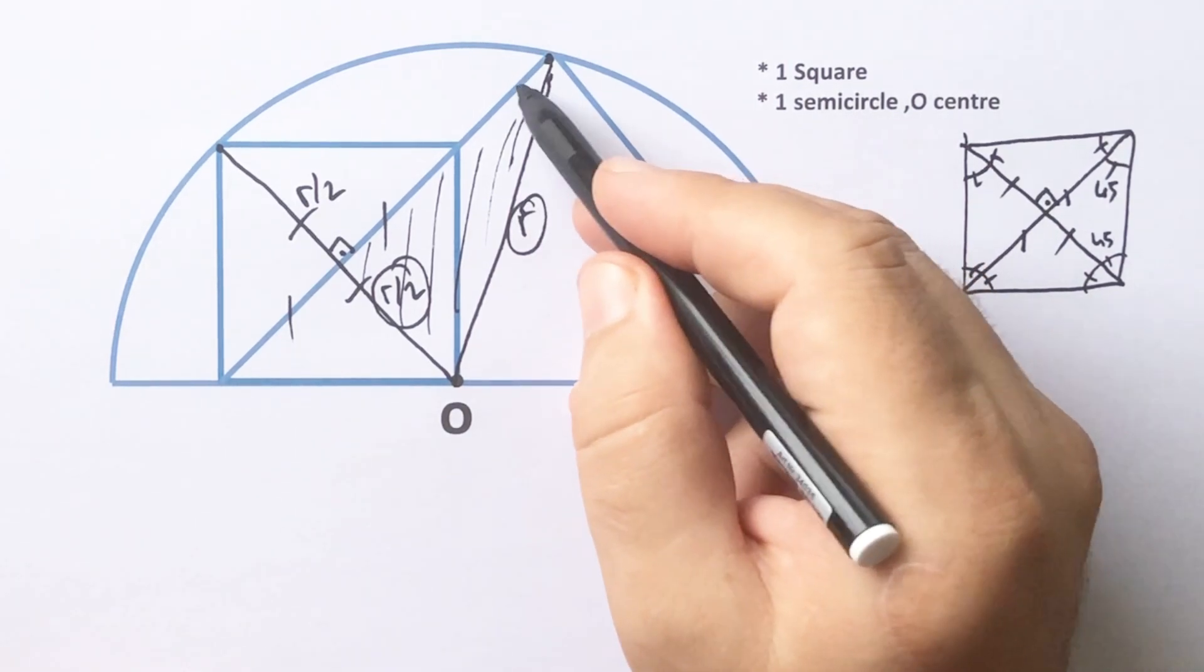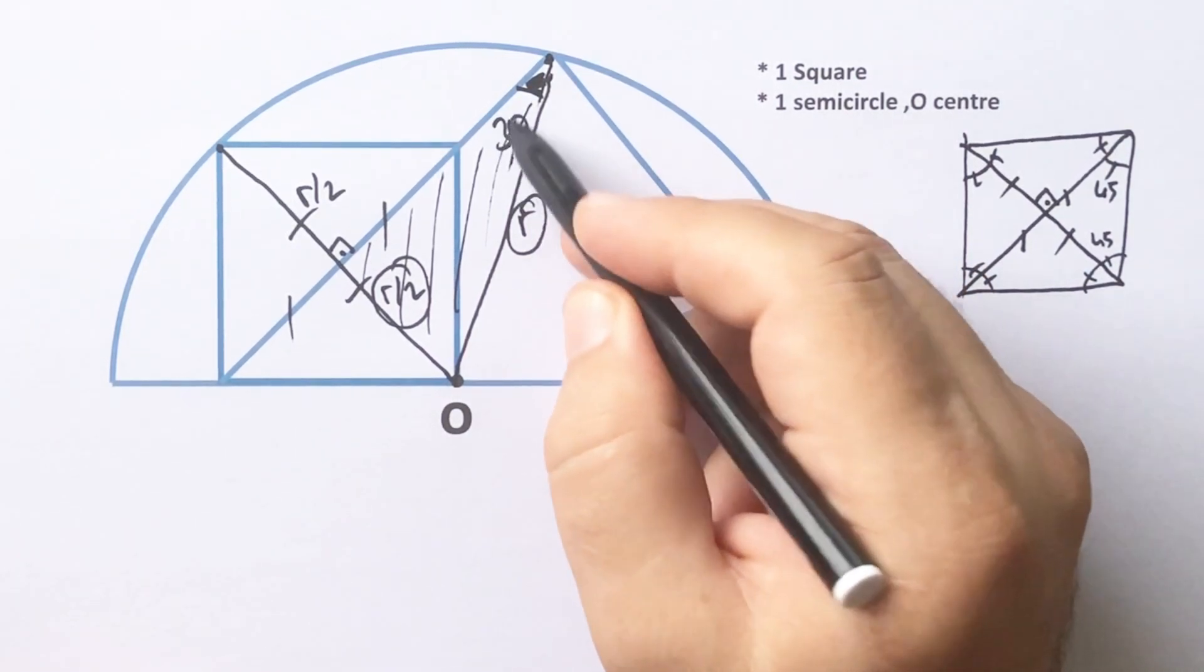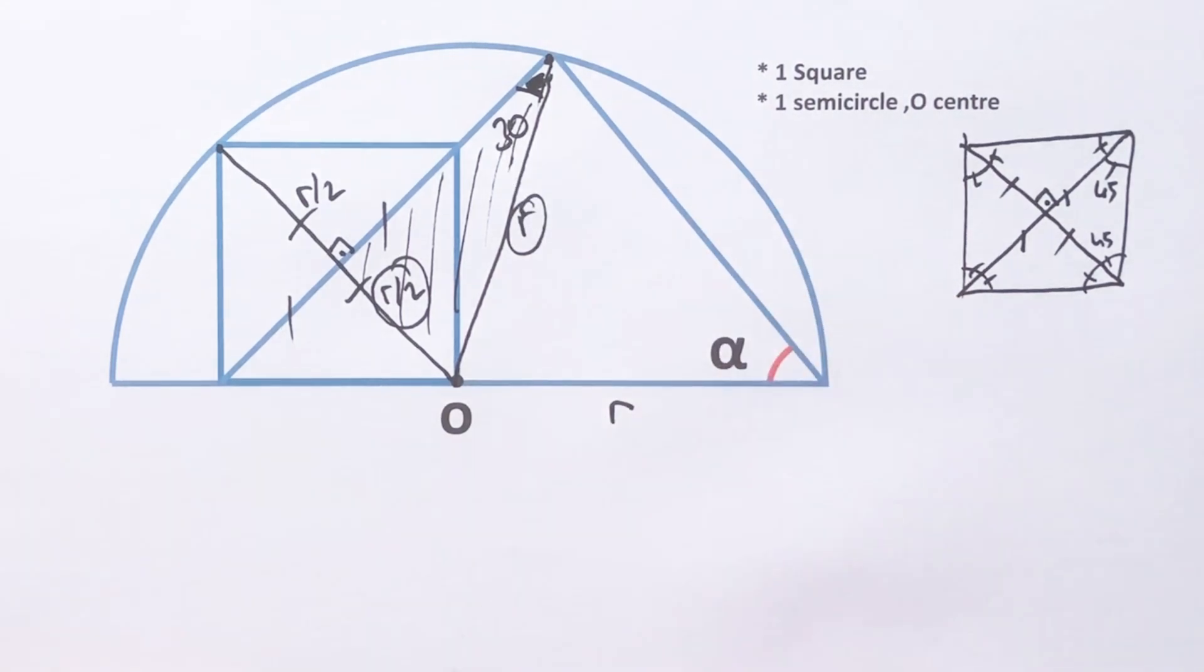That means this angle must be 30 degrees, right? Why? Let's remind you if we have a right triangle,